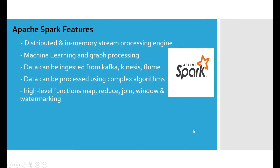Apache Spark is a distributed and in-memory stream processing engine. It can receive data from a source system and process it in memory in a distributed format, which drastically increases computing speed and power. Spark also includes a machine learning framework and graph processing in one bundle. Data can be ingested from Kafka, Kinesis, Flume, and other source systems — meaning you can easily ingest data from Kafka topics.